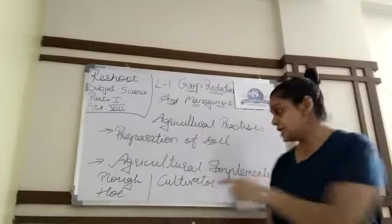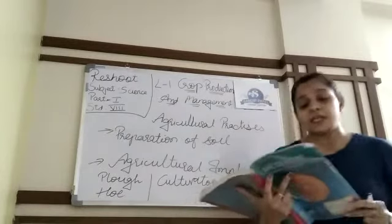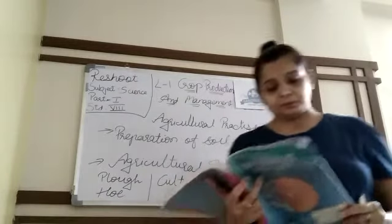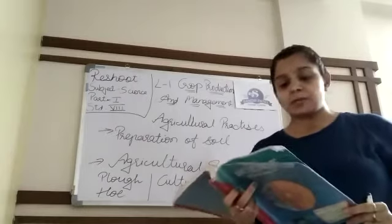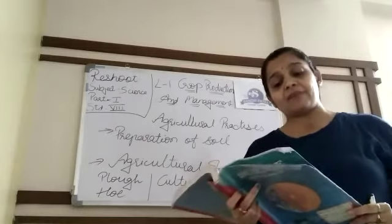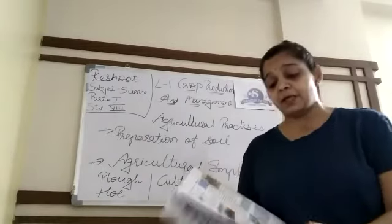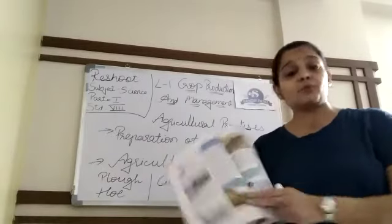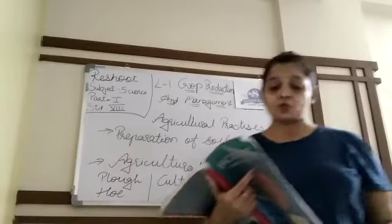The third implement is cultivator. Cultivator is a tractor. Nowadays, plowing is done by tractor-driven cultivator. Pahle ke zamane mein, zyada tar bull use hote the; ab tractor use hota hai.